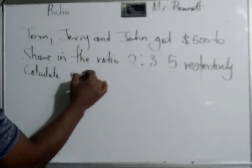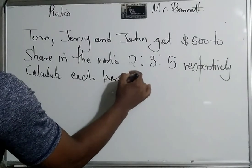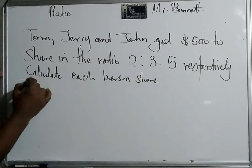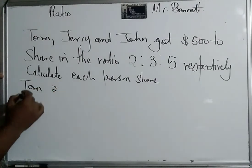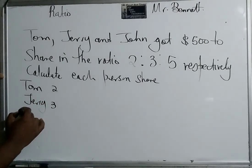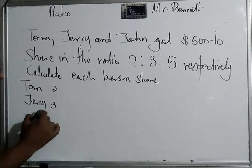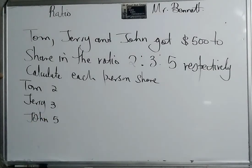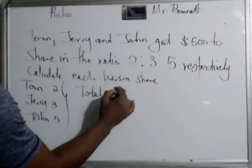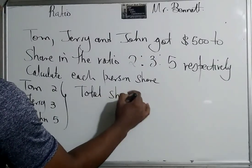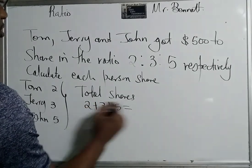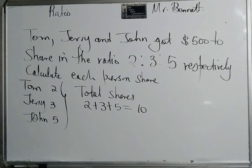And it says calculate each person's share. Now let us put the names to it. So Tom will get 2, Jerry 3, and John 5. So we need to find the total shares. Let us do that now. Total shares, because we need to know how many shares the total represents. That will be 2 plus 3 plus 5, so that gives us 10. So the total share is 10.